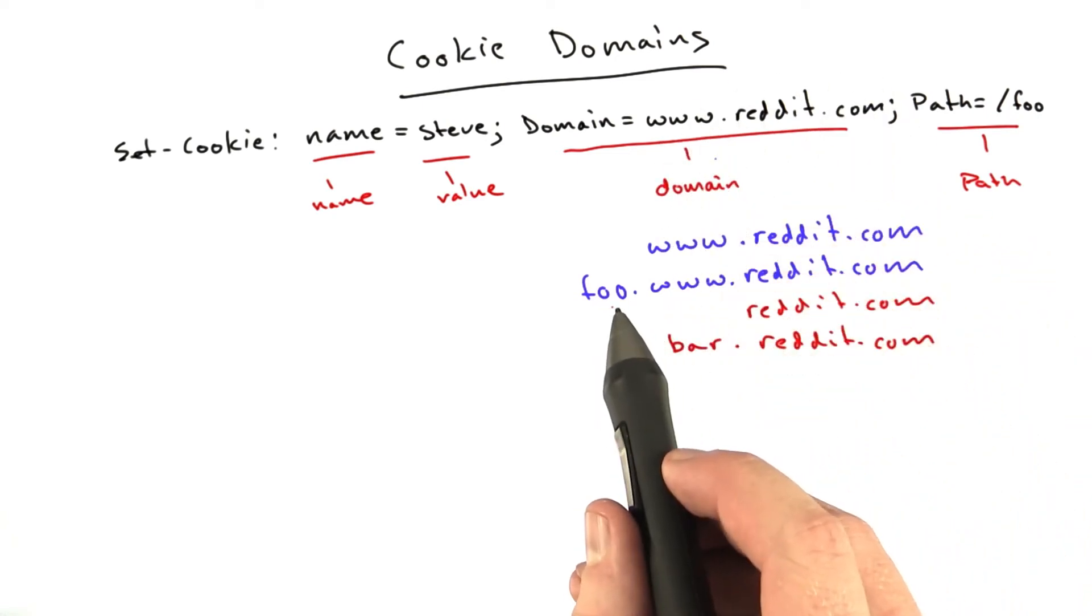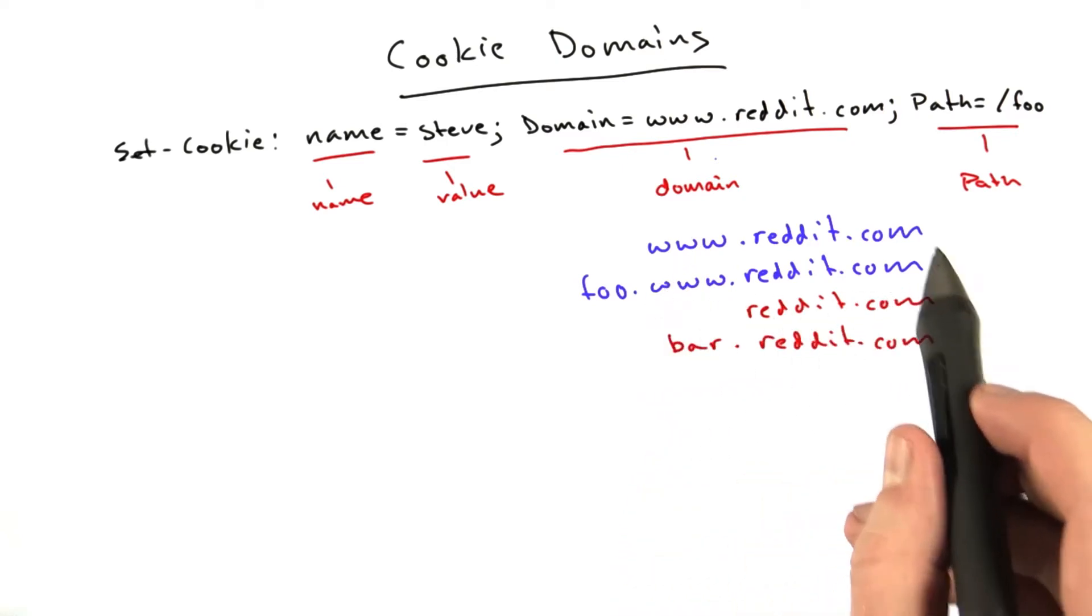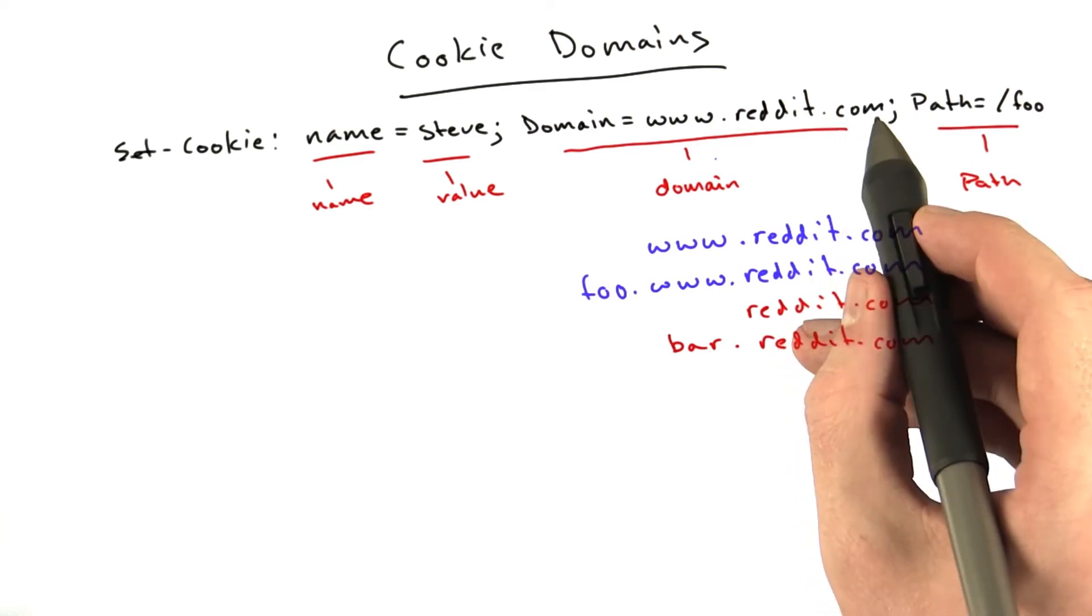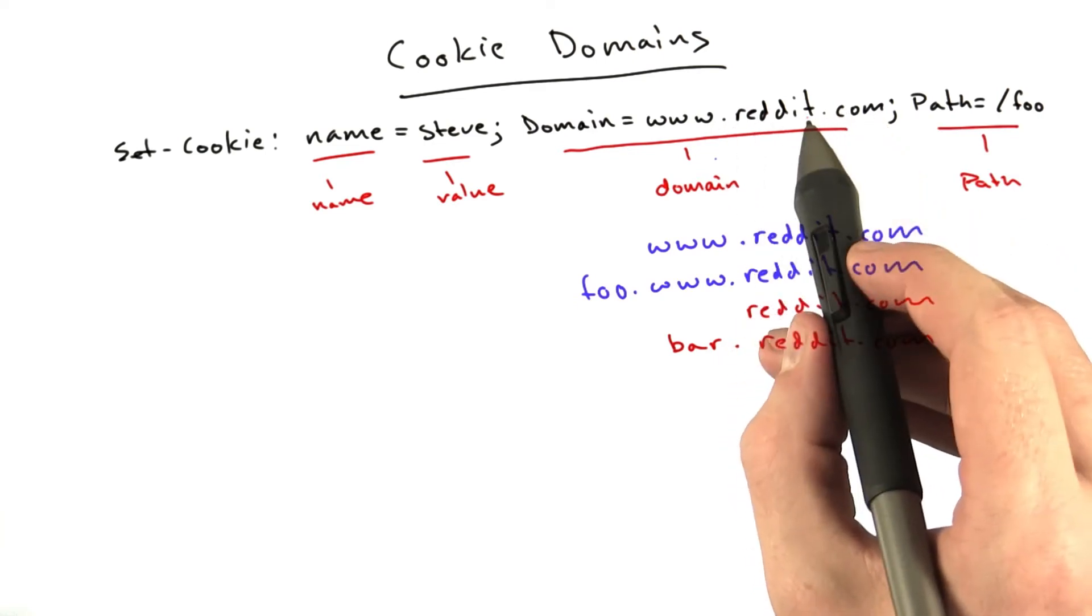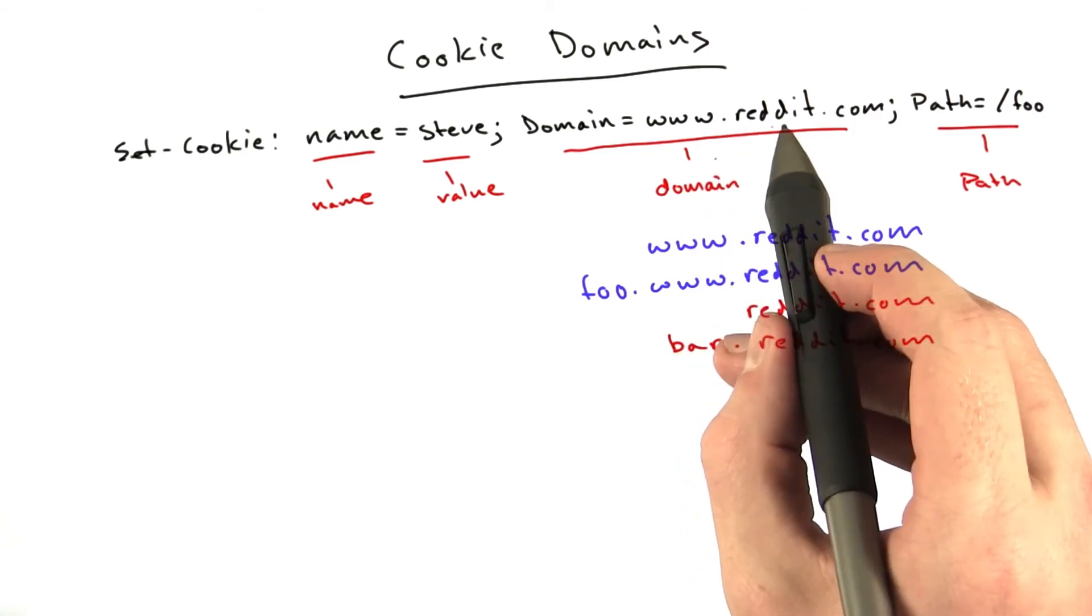So basically, the site you're at has to end with www.reddit.com. You can't set cookies to just .com. You have to have at least two periods. So the minimum domain you can set a cookie for is period.reddit.com.